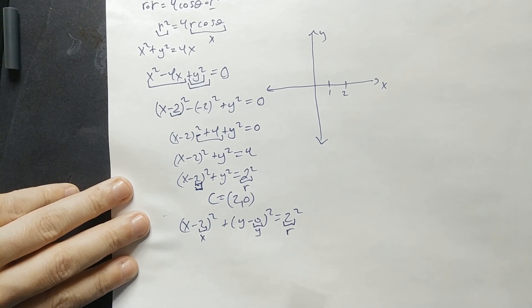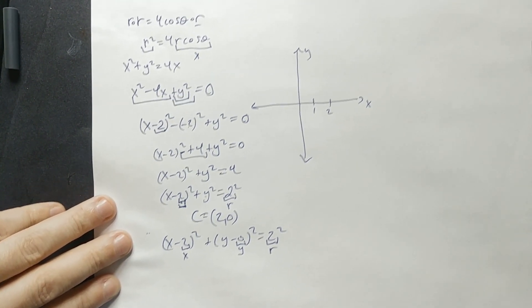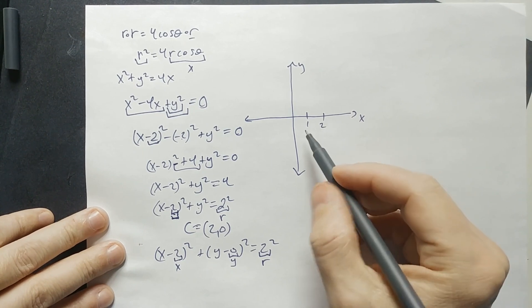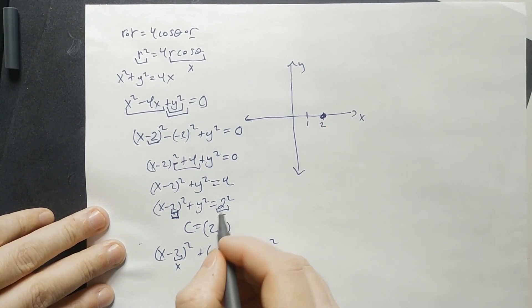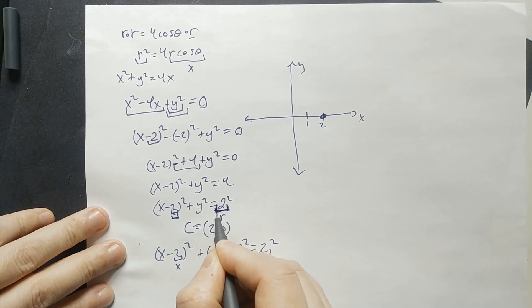And this here is the radius. Sometimes those additional details are really important to help you see. Anyway, so our center is 2, 0. And then our radius, again, the radius is this 2 right here.